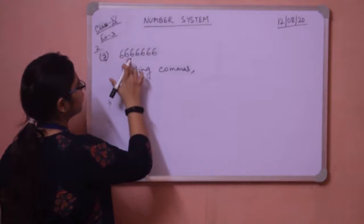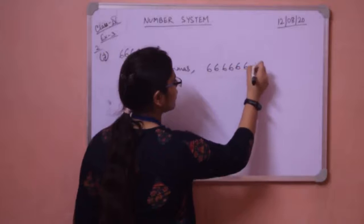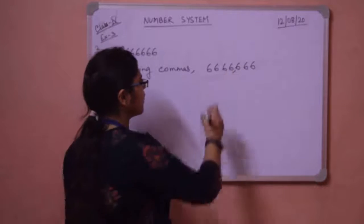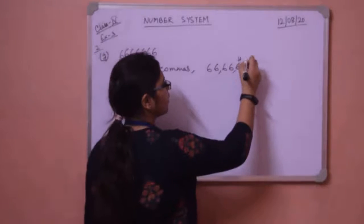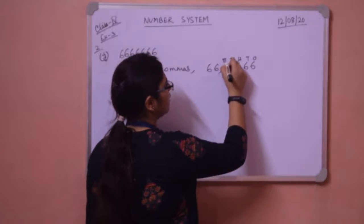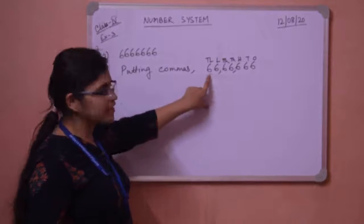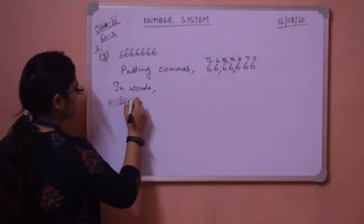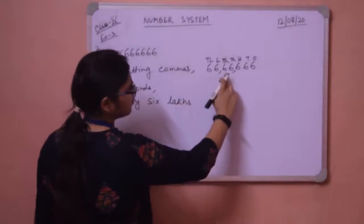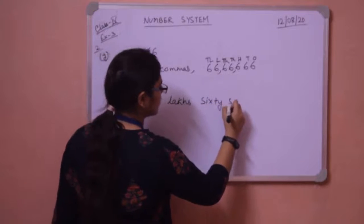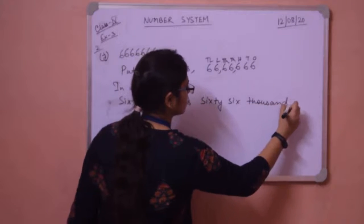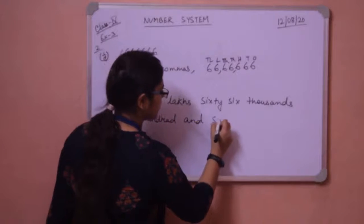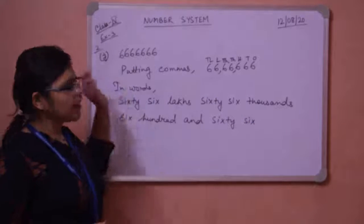How many digits are there? 1, 2, 3, 4, 5, 6, 7 — so there are 7 digits. In the Indian system, first leave 3 digits and put the first comma, then again after 2 digits put the second comma. The place values are: H-T-O, then thousands, ten-thousands, then lakh and ten-lakh. So this number is 66 lakh, 66 thousand, and 666. We write: 66 lakh, 66 thousand, six hundred and sixty-six.